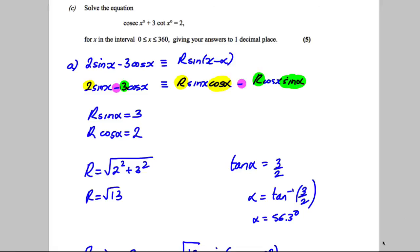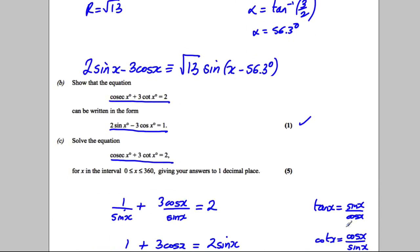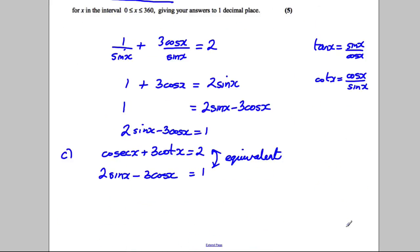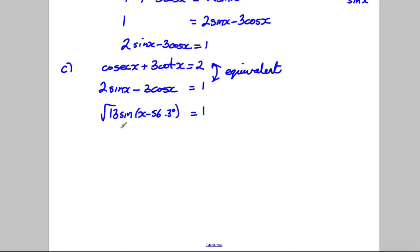And what did we say this was? We said it was root 13 sine x minus 56.3, so this is root 13 sine x minus 56.3 degrees equals 1. So what we're going to do now is divide by root 13, so sine of x minus 56.3 is going to be 1 divided by root 13. Inverse sine both sides, x minus 56.3 is the inverse sine of 1 divided by root 13.